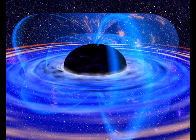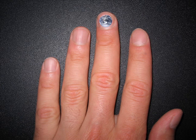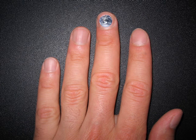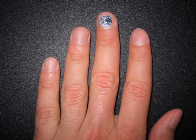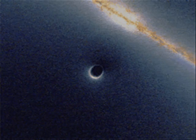Anything can be a black hole providing it is squashed down small enough. If you squashed the Earth down to the size of your fingernail, it too would have strong enough gravity to stop all the light and everything else escaping.